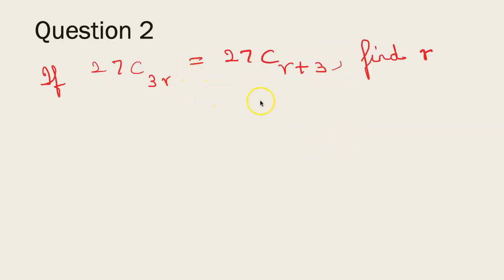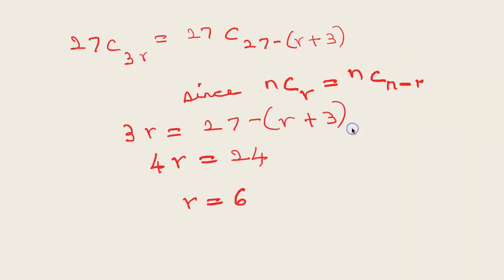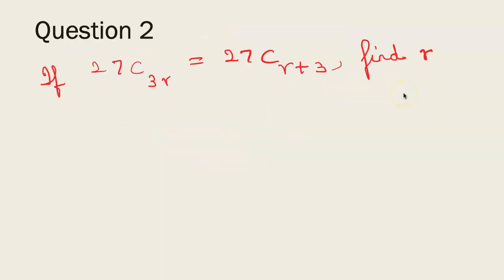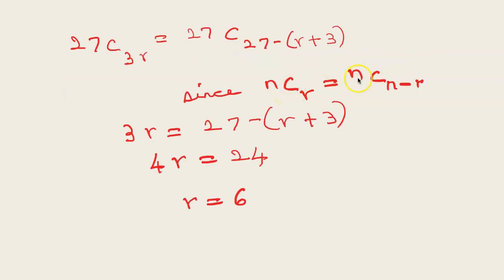Coming to question 2, if 27C3r = 27C(r+3), find r. So 27C3r = 27C(27 - r - 3). We use the property nCr = nC(n-r). Why do we use this? Because if we put 3r = r + 3 you get r = 3/2 which is a fraction which is not possible. So we use this property. So 3r = 27 - r + 3 and solving we get r = 6.